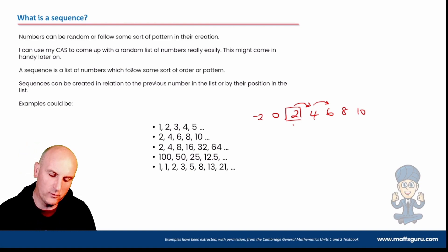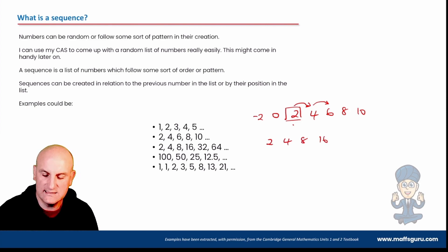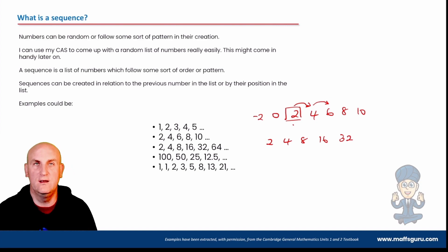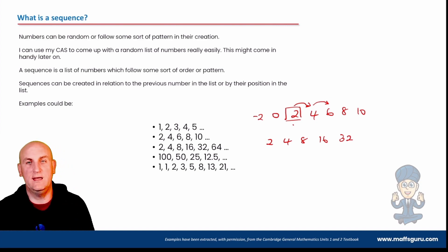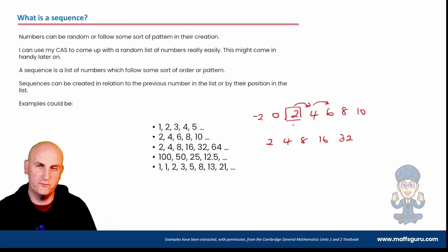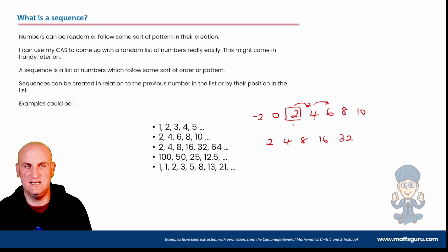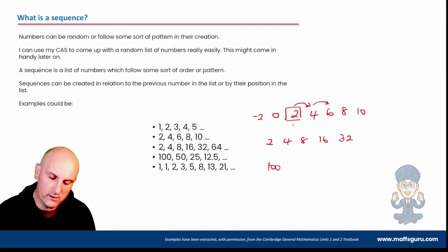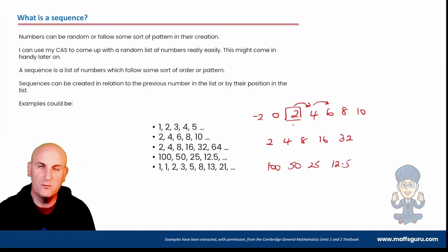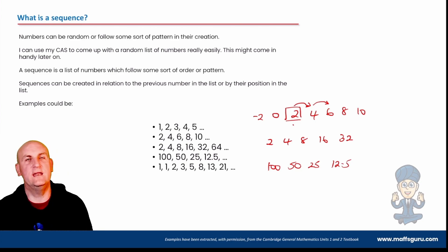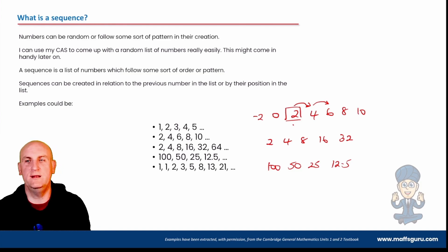What about 2, 4, 8, 16, 32? I've taken my previous number and doubled it: 2 times 2 is 4, 4 times 2 is 8, 8 times 2 is 16. What about 100, 50, 25, 12.5? I seem to have taken a number and halved it — so I've either divided it by 2 or multiplied it by a half.